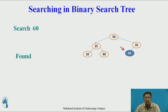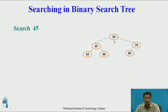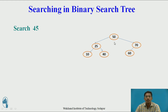This is how searching is done in a binary search tree. Now we will see another example of how searching is done when a node is not present. I want to search for 45 — whether 45 is present in this binary search tree or not. First, 45 is compared with 50. Since 45 is not equal to 50, we continue searching. To find whether 45 is on the left or right subtree: 45 is less than 50, so 45 should be on the left subtree. We discard the complete right subtree.